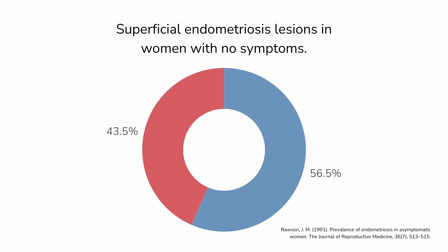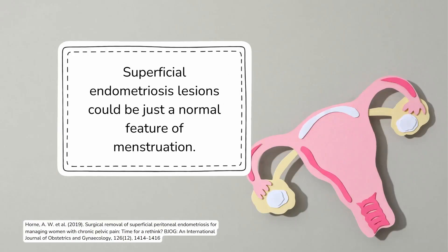According to a 2019 article in the British Journal of Obstetrics and Gynecology, at least some superficial endometriosis lesions could simply be a physiological phenomenon or a normal feature of menstruation. By physiological or normal, they mean that at least some of what's currently classified as superficial endometriosis lesions are essentially just harmless deposits of endometrial-like tissue that come with having periods and that the immune system will likely eventually clean up.